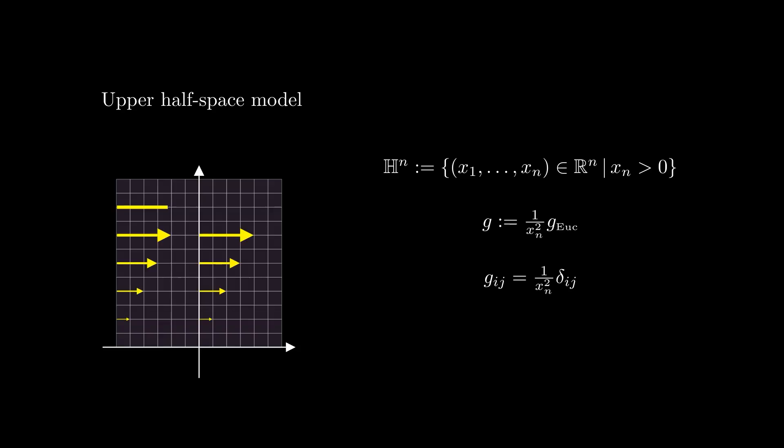For example, in the hyperbolic space, all the vectors in the picture have the same length. Some of them seem shorter because their Euclidean length is small, but this is compensated with the fact that they are close to the plane x_n equals 0.